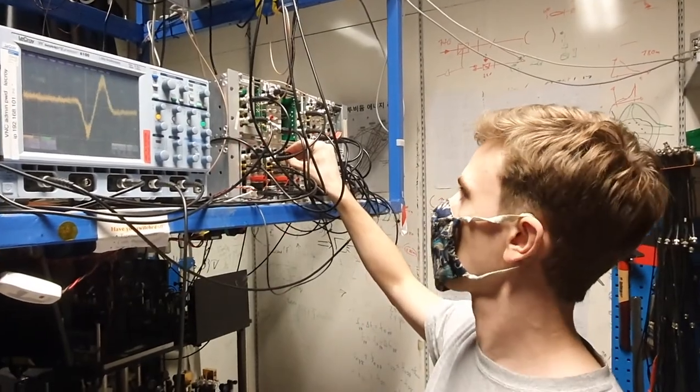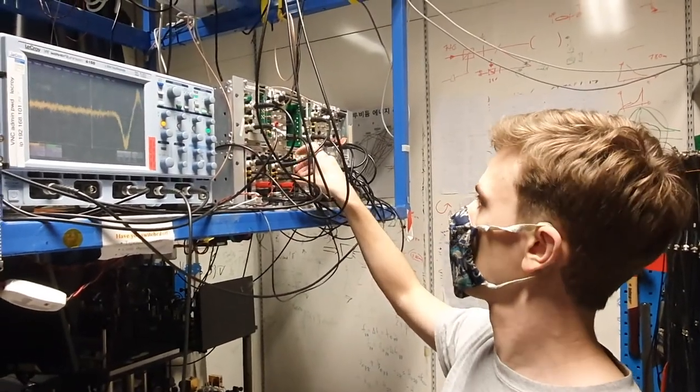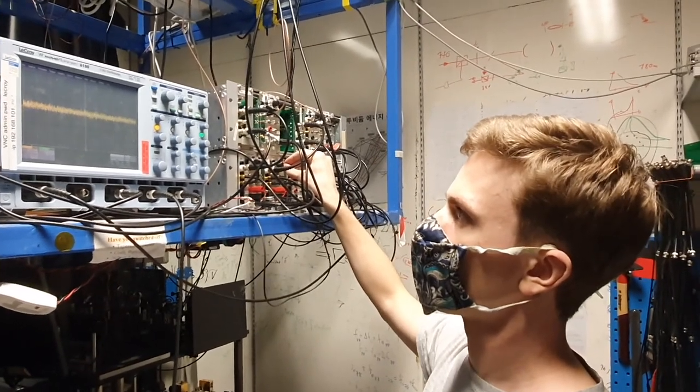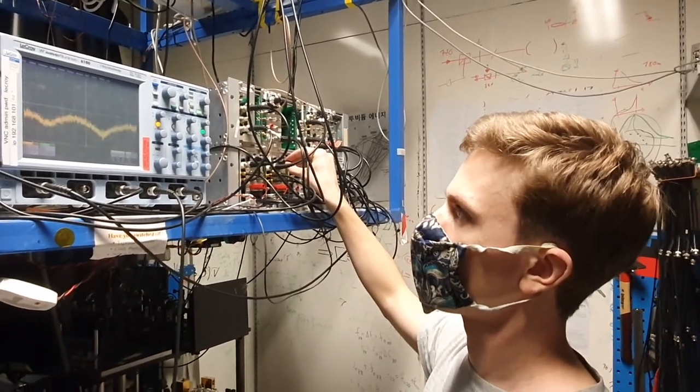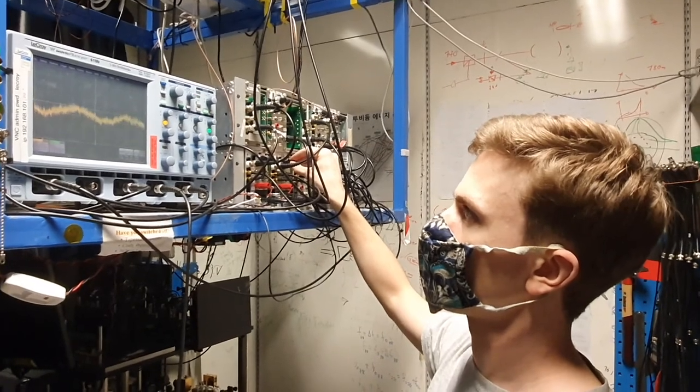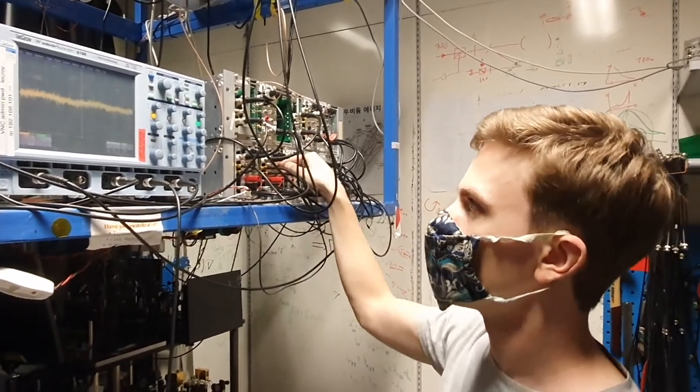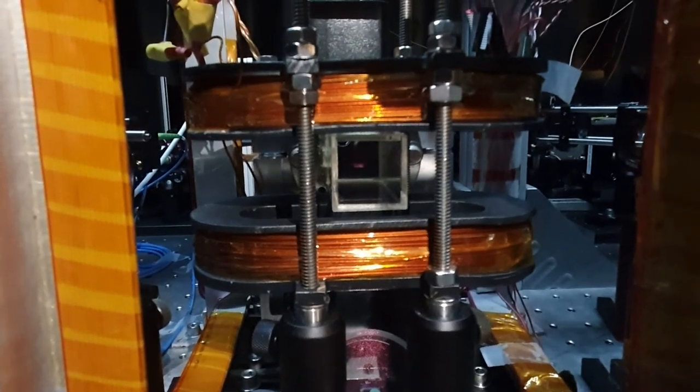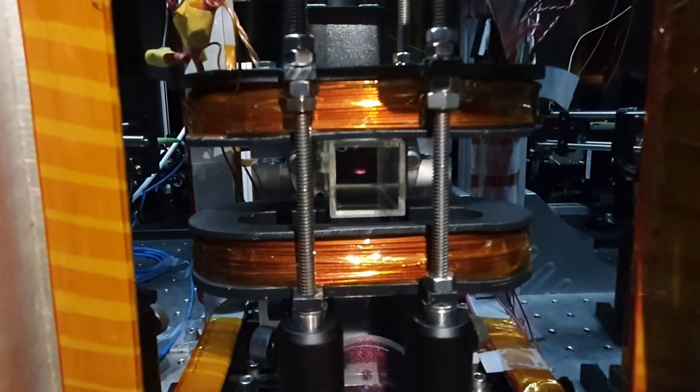Here we lock the laser used in the Doppler cooling to slow the atoms down. So we need to lock the laser at the correct transition frequency. Locking the laser enables us to trap the atoms, visible in red in the middle of the cuvette here.